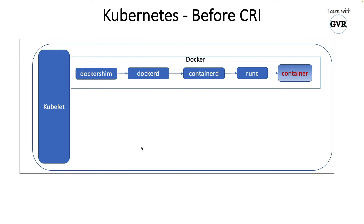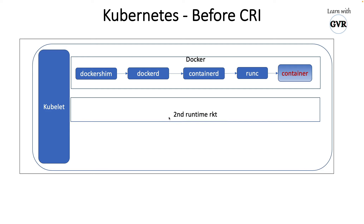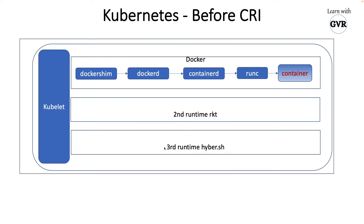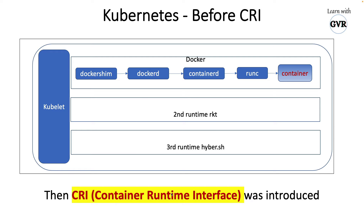During Kubernetes versions from 1.5 up to 1.24, a second runtime called rkt was introduced and incorporated into kubelet. Then a third runtime called hyper.sh also joined. Problems started because kubelet had to maintain multiple runtimes — each had its own logic, and kubelet had to understand and distribute work accordingly. That complexity is what led to the container runtime interface being introduced.